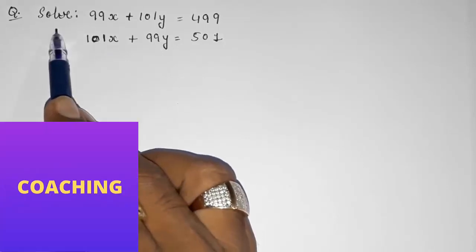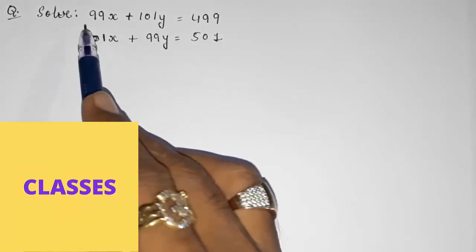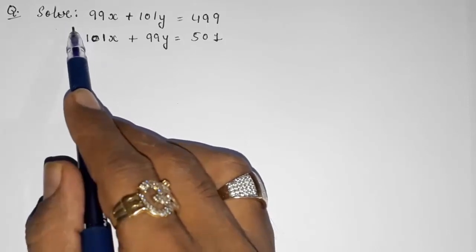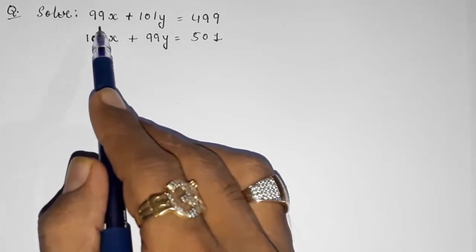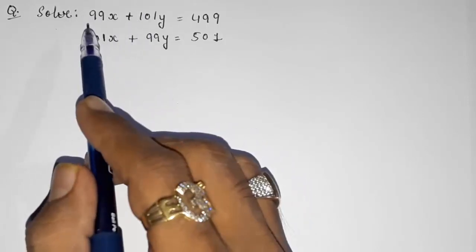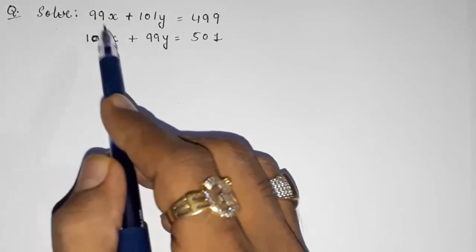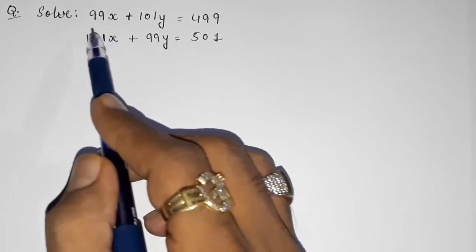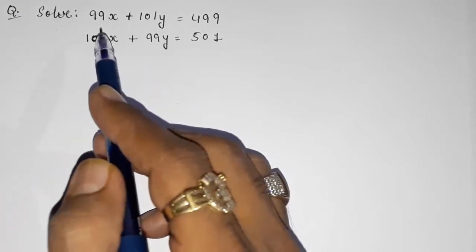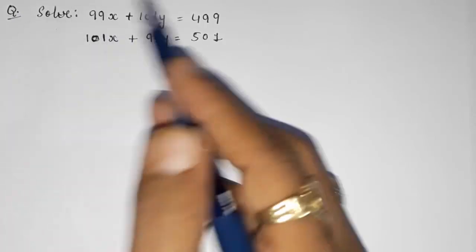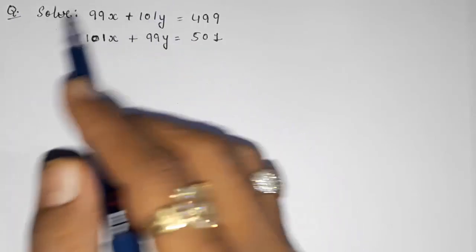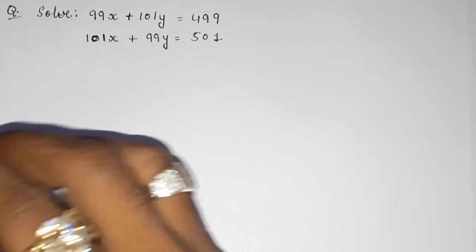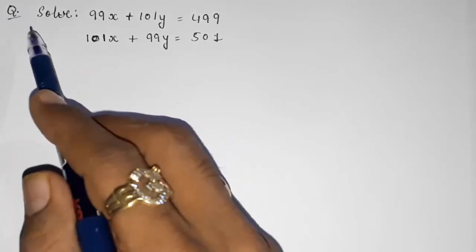Hello friends, today we are going to solve extra important questions of chapter number 3: Pair of Linear Equations in Two Variables. These questions are important as they are asked in board examinations. They are extra because they are not given in your textbook. I had made part one and two — you can watch those also. In this part three, we are going to solve a few more questions.